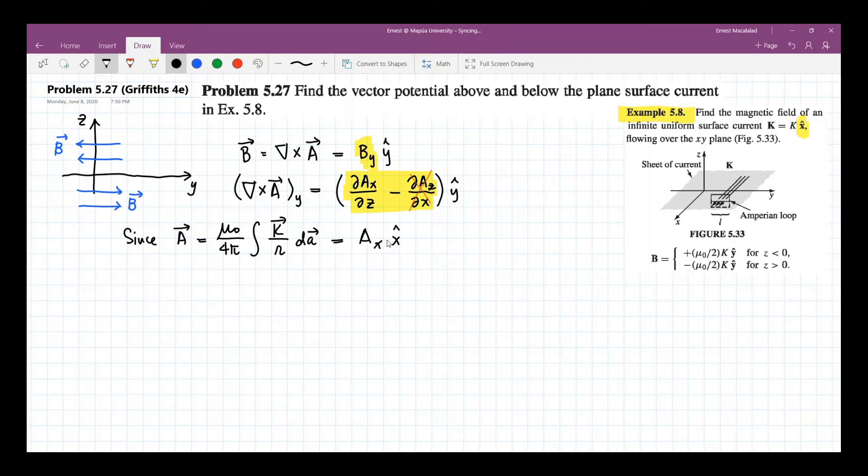So now let's do the comparison. This will now be compared to this. And what is By? By is plus or minus mu naught k over 2, so this becomes plus or minus mu naught k over 2.